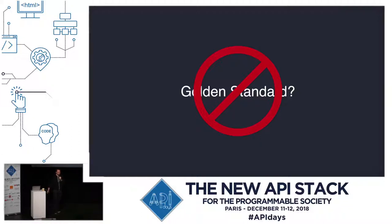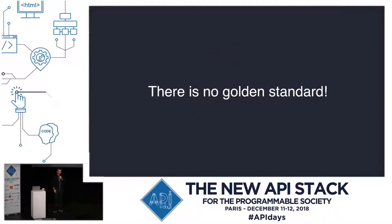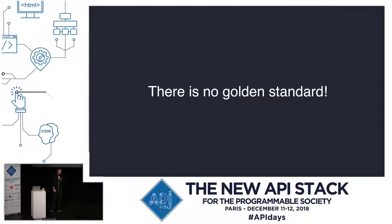The bad news is that there is no golden standard. It was true six years ago, and it's still true today — probably more so than it was back then. And so when we're thinking about why that is, I think it's really good to go back and start thinking about what an API is to begin with.